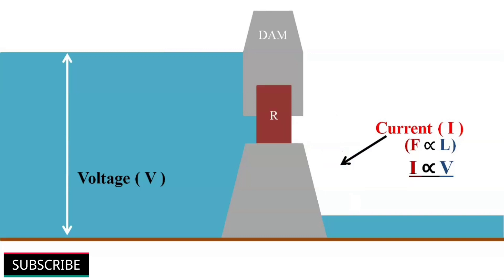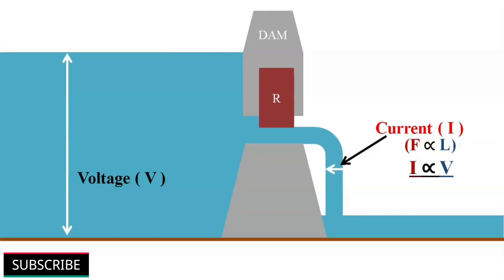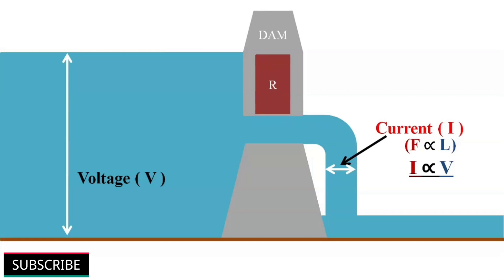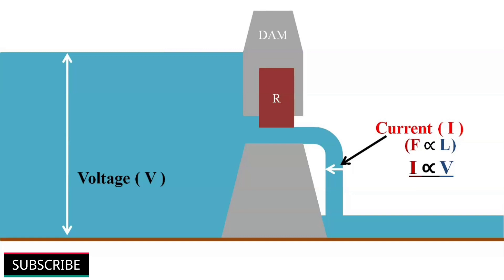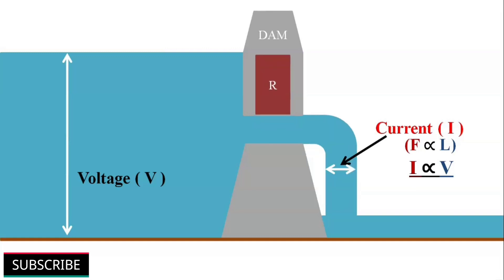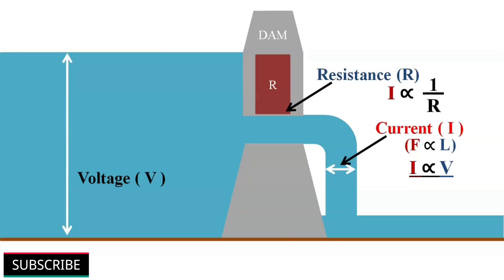We can stop the water flow by closing the floodgate. If we slightly open the gate, we get some flow. If we open it completely, we get more flow. The flow depends on how much the floodgate is kept open. Consider this gate as resistance in a circuit. If the resistance is more, the flow of current is less, and vice versa. So the flow of current is inversely proportional to the resistance in the circuit.